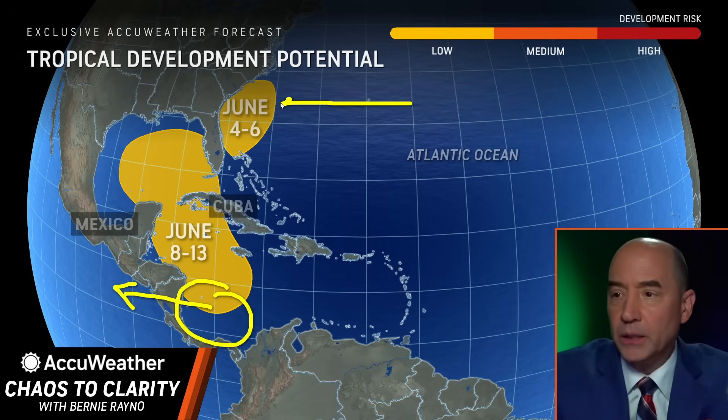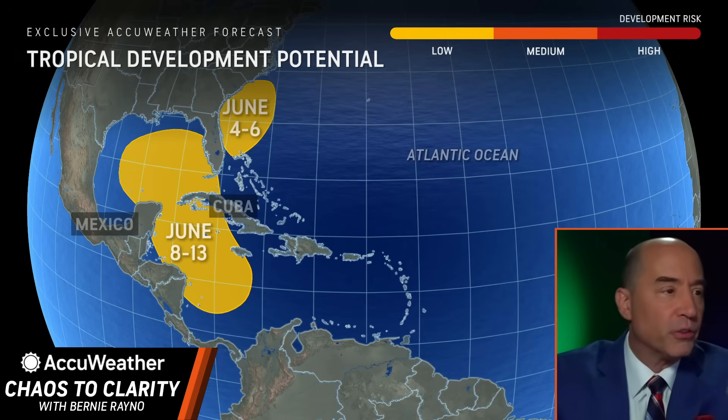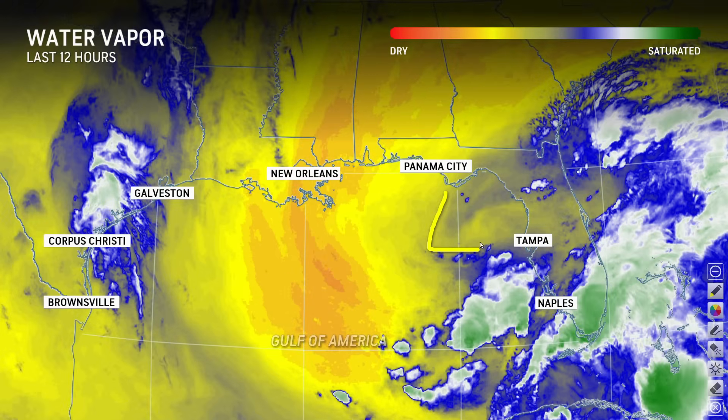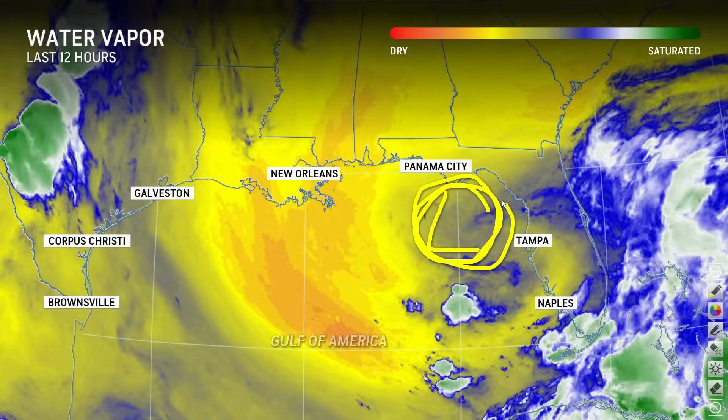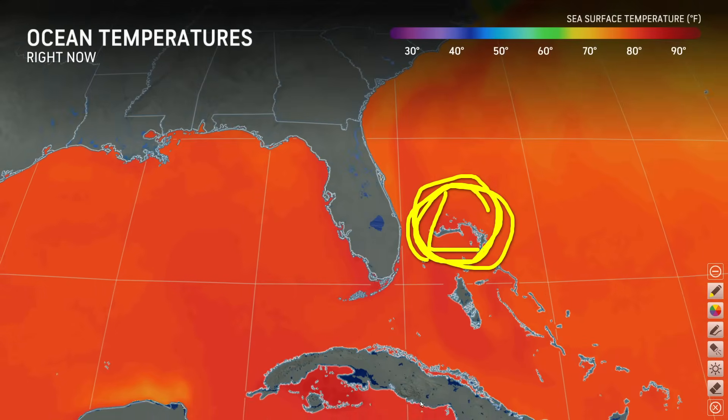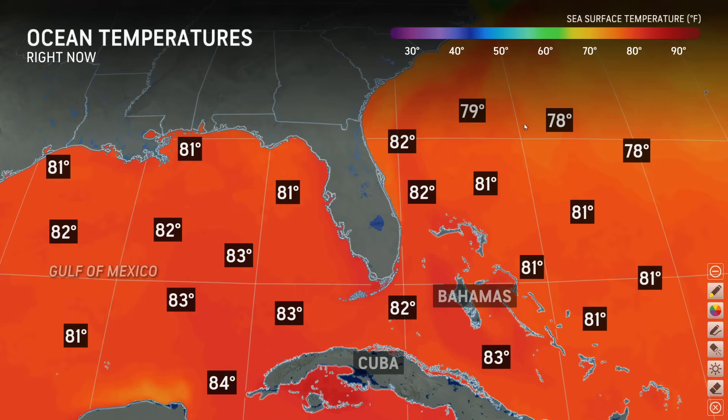Let's tackle the area off the Southeast coast of the United States first. Why are we worried about tropical development here? Because you have an upper low — the jet stream has come south. There's a water vapor loop, and you can see the upper low spinning right here, east of Tampa, sitting over the open waters of the Gulf of America. Water temperatures are warm enough for development — you look for about 78 to 79 degrees — it's 80 to 81 here. Water temperatures are not a problem. They're also certainly warm enough in the Caribbean — they almost always are.